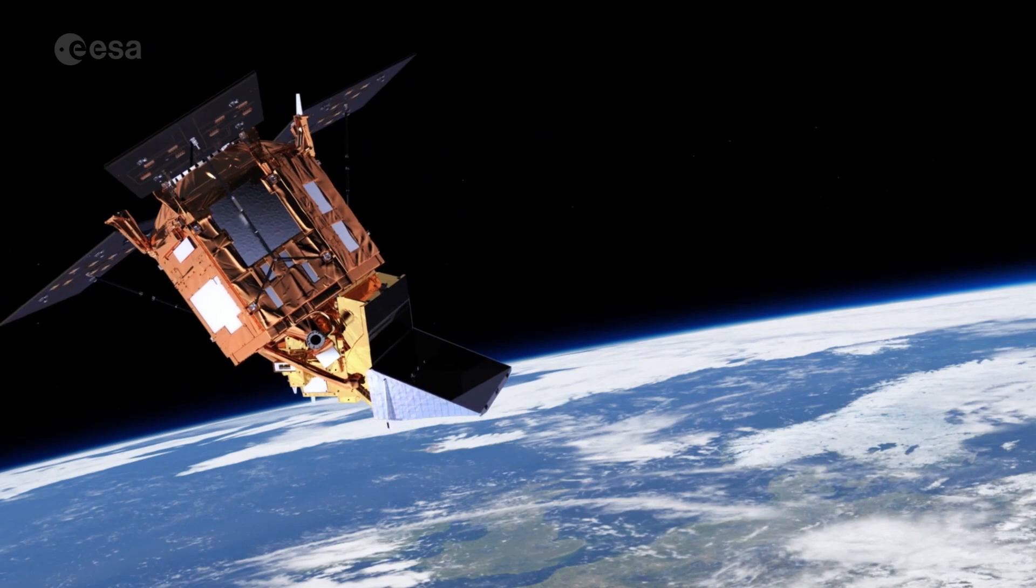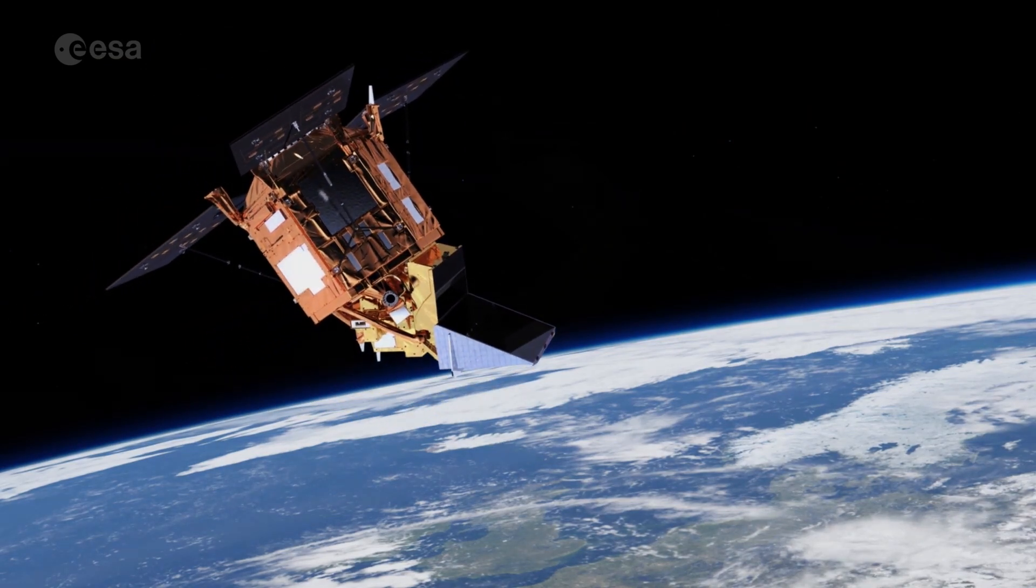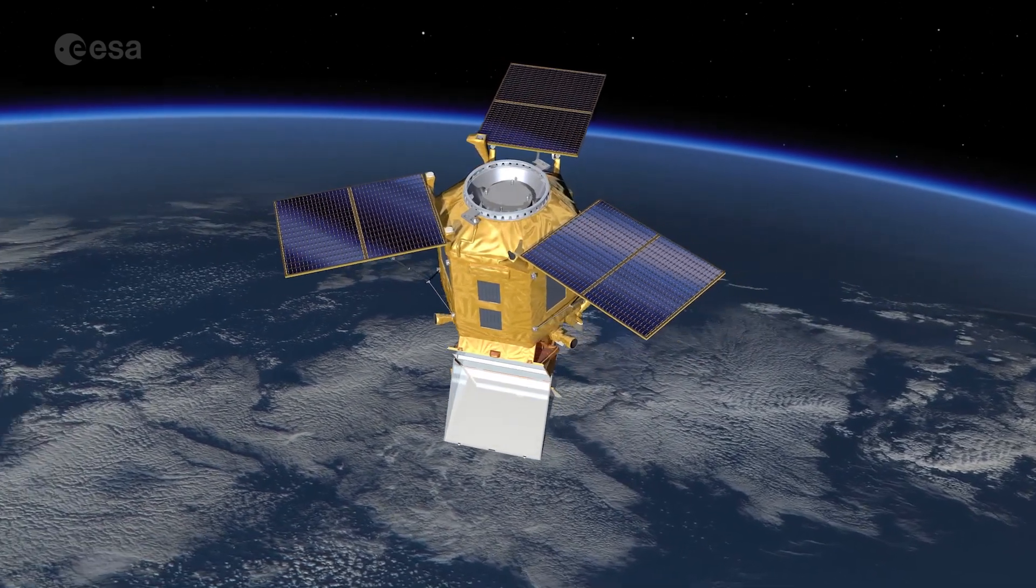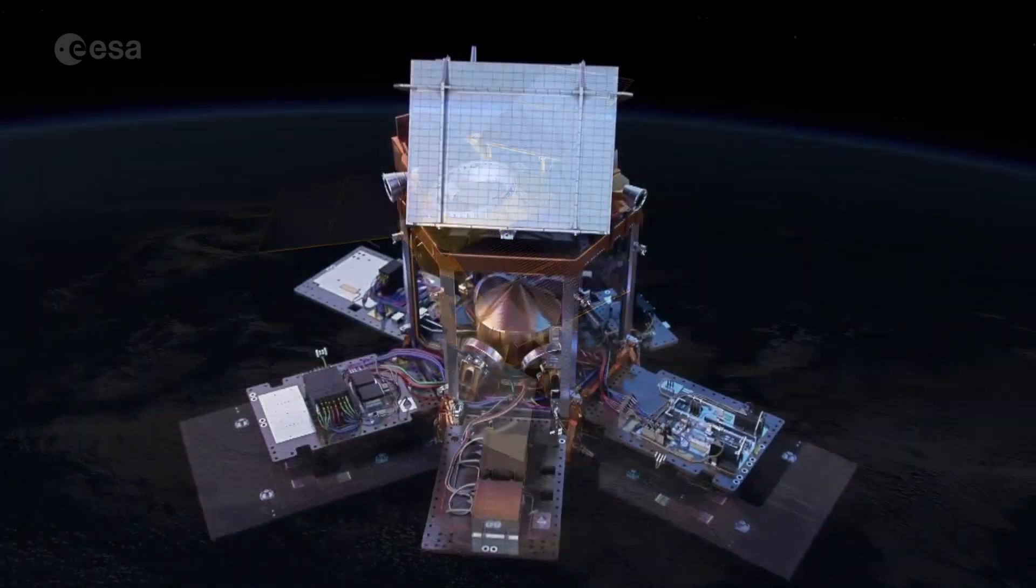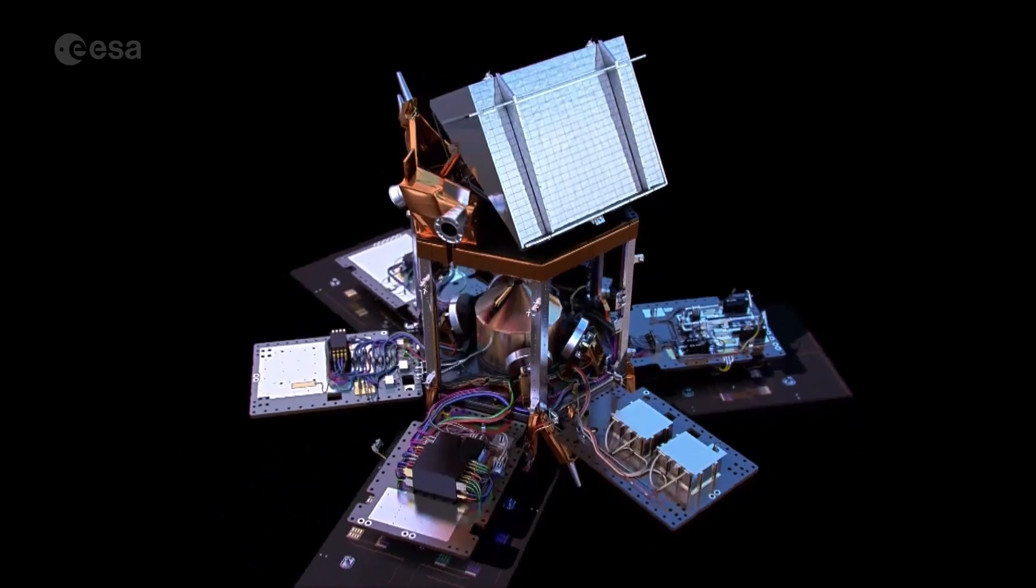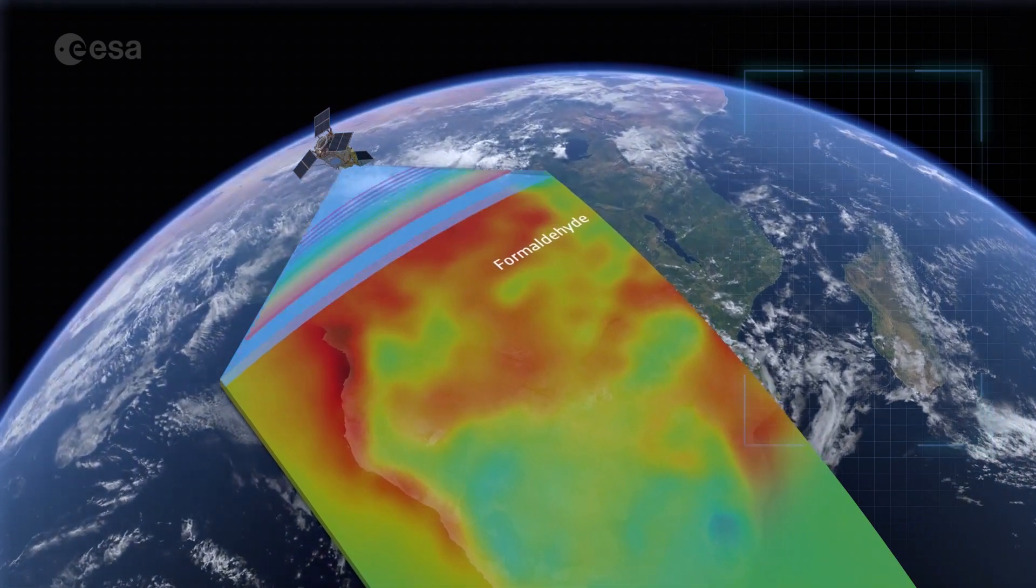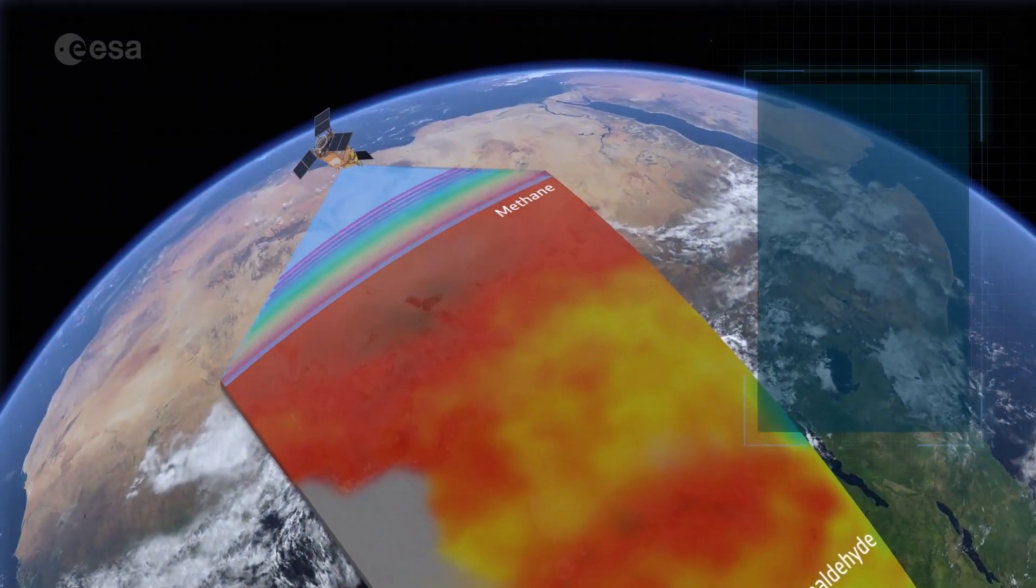The Copernicus Sentinel-5P satellite is the first Copernicus mission dedicated to monitoring our atmosphere. This satellite of the European Union's Copernicus program carries the state-of-the-art TROPOMI instrument, designed to map a multitude of trace gases, such as nitrogen dioxide.